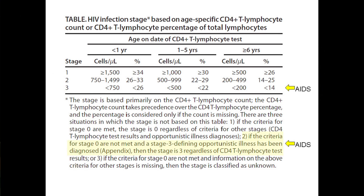CD4 cell counts also help diagnose HIV infection. In adults, the normal count is approximately 500 CD4 cells per microliter. A count below 200 in an HIV-infected person constitutes an AIDS diagnosis. For newborns, CD4 counts are naturally much higher, so 750 cells per microliter is used as the AIDS cutoff.